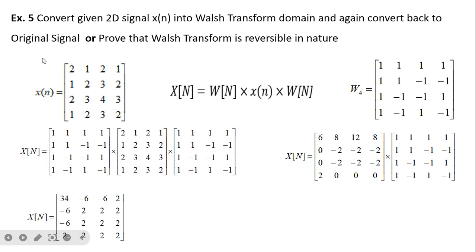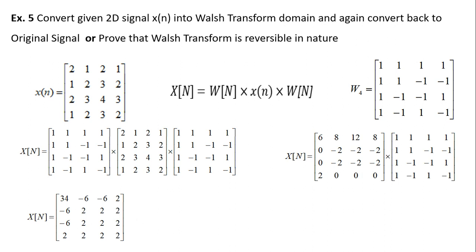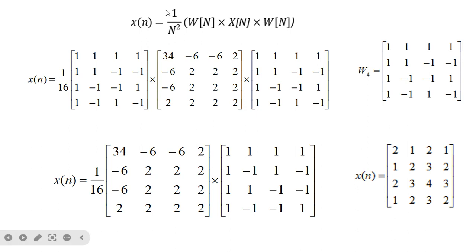The problem statement gives a 4×4 input signal. Since it is two-dimensional, we apply W(n) · x(n) · W(n) with W4. First we multiply the two left-hand matrices to get an intermediate result, then we multiply that result by the third matrix to get the final answer — the two-dimensional signal in the Walsh domain. To recover the original, we use (1/16) times the Walsh transform signal, multiplied sequentially by the Walsh matrices, and we get the original signal back.